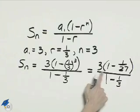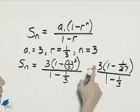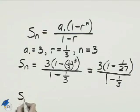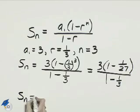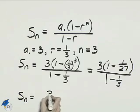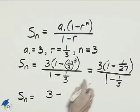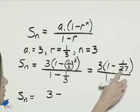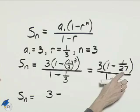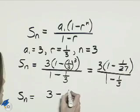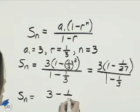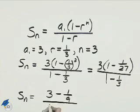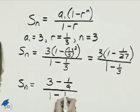Let's multiply through this numerator by 3, so we'll have S sub n equals 3 minus 3 times 1 over 27. The 3 and the 27 can reduce, and we should have 1 over 9, and then the denominator is 1 minus 1 third.